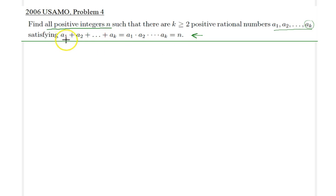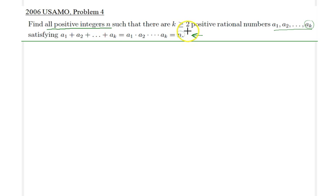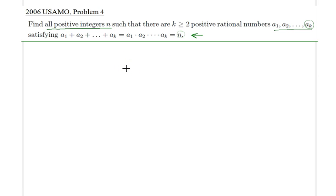Before applying AM-GM, I would also like to test some values of n and see if this equality condition holds. For instance, it's easy to check that this result holds for n equal to 4, 6, 7, and so on. So ultimately, once you do all the algebra, it turns out certain solutions work.